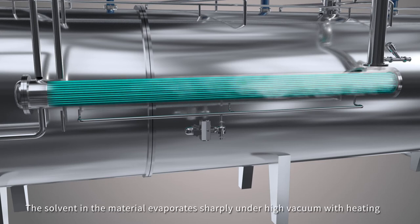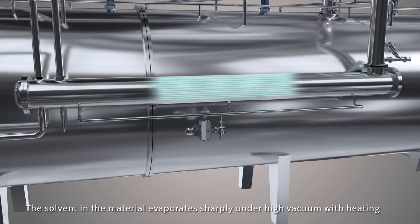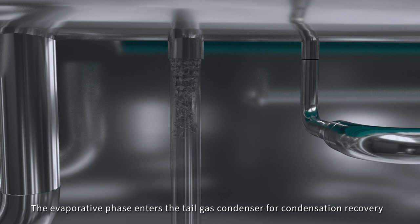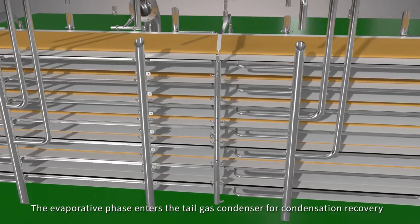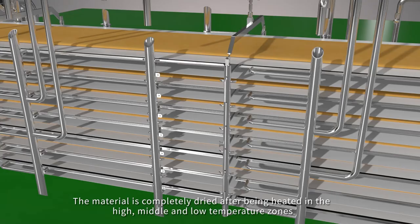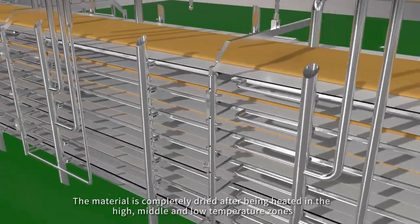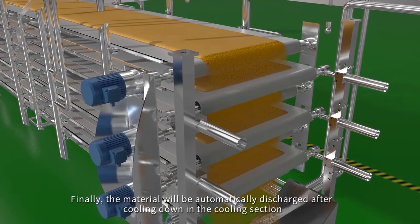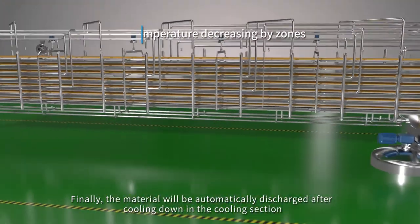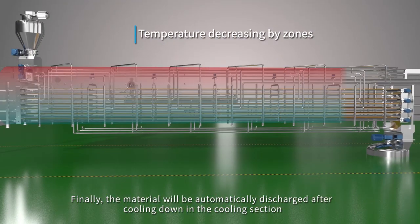The solvent in the material evaporates sharply under high vacuum with heating. The evaporated phase enters the tail gas condenser for condensation recovery. The material is completely dried after being heated in the high, middle, and low temperature zones. Finally, the material will be automatically discharged after cooling down in the cooling section.